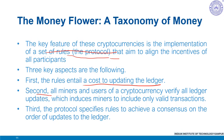Next, all miners and users of cryptocurrency verify all ledger updates to ensure only valid transactions are included. Valid transactions must be initiated by the owners of funds and must not be attempts to double spend or malicious attacks. If a ledger update includes an invalid transaction, it is rejected by the network and the miner's rewards are voided. This verification mechanism is essential to incentivize miners to add only valid transactions.